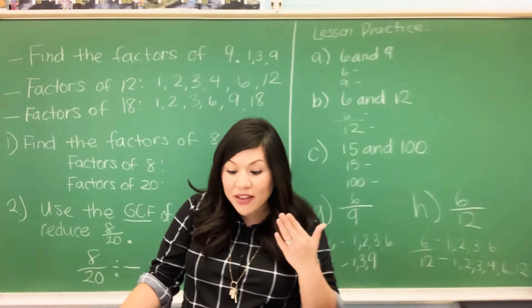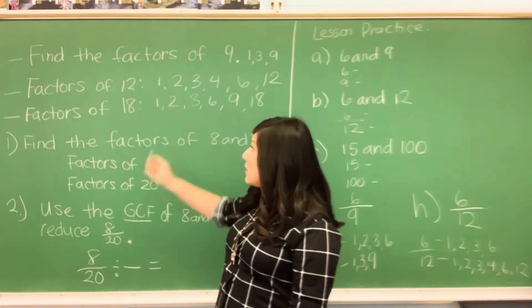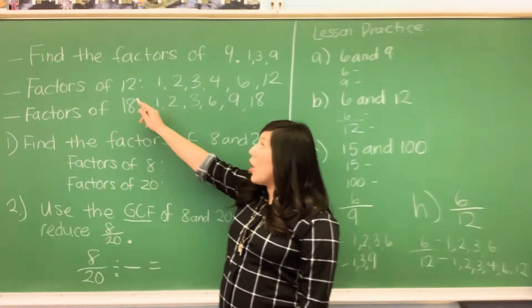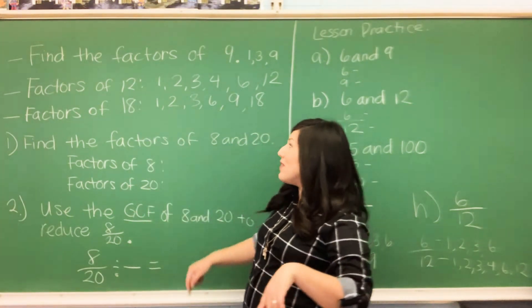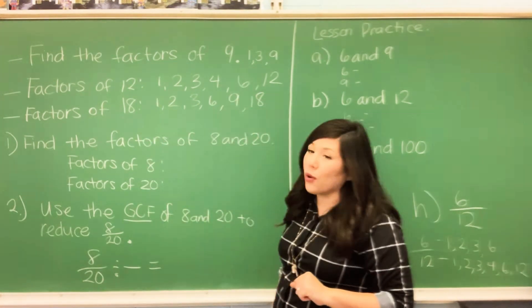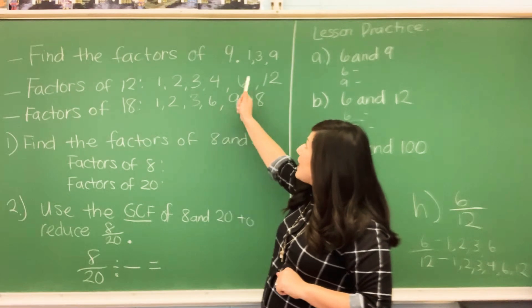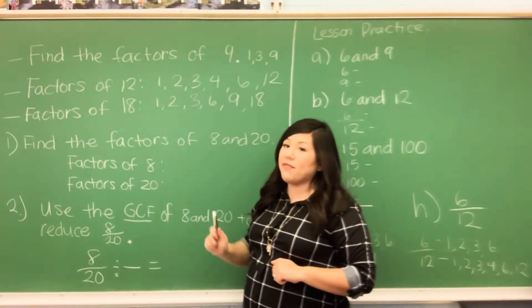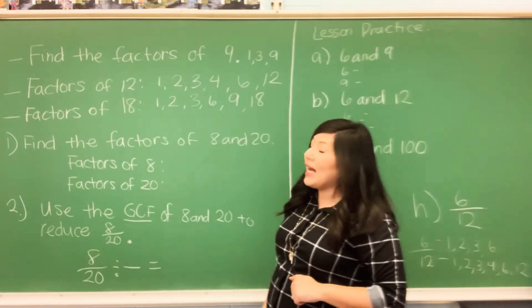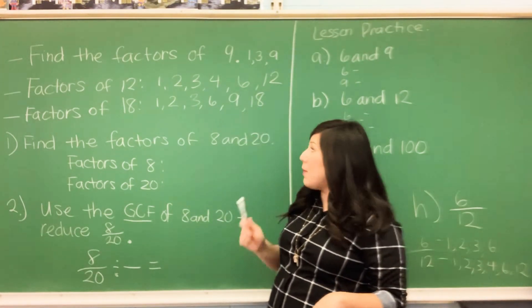To find the greatest common factor, we're going to do an example here with the numbers 12 and 18. The factors of 12 are the following: the number one and 12 itself gives me two factors automatically. Then I know that 2 times 6 gives me 12, so 2 is a factor, and so is 6. The factors of 12 are: 1, 2, 3, 4, 6, and 12. I hope that you remember that lesson from a couple weeks back.